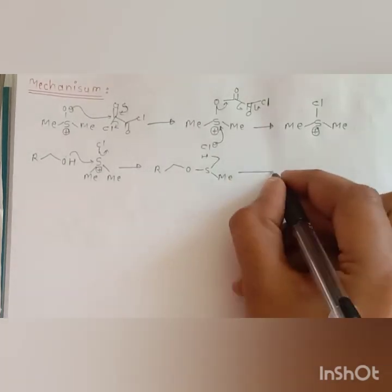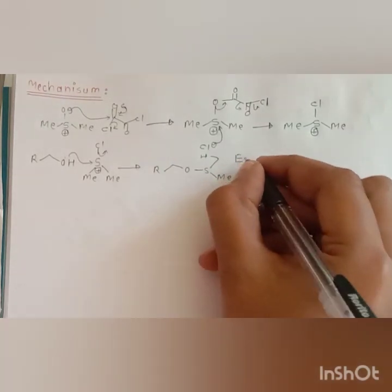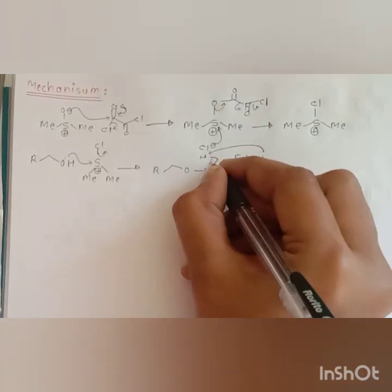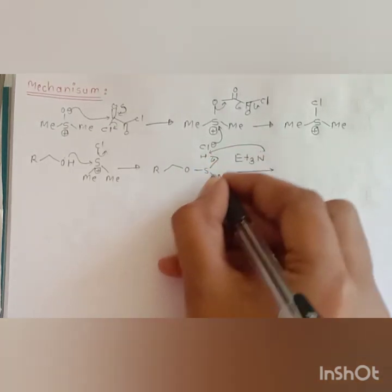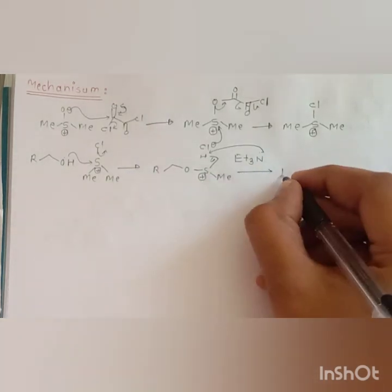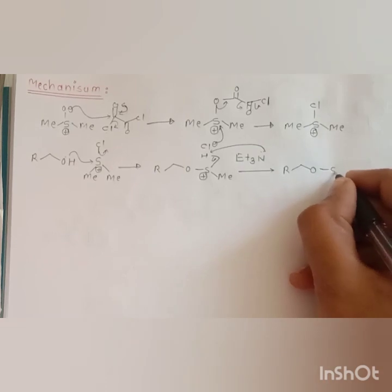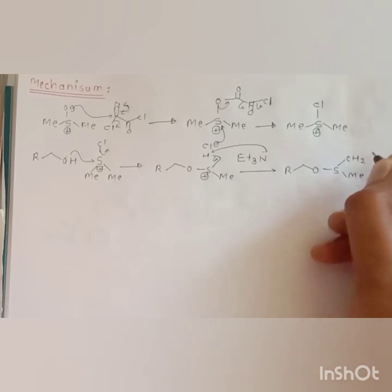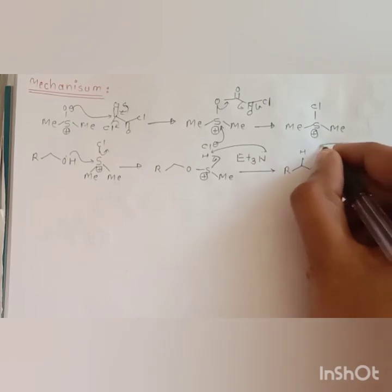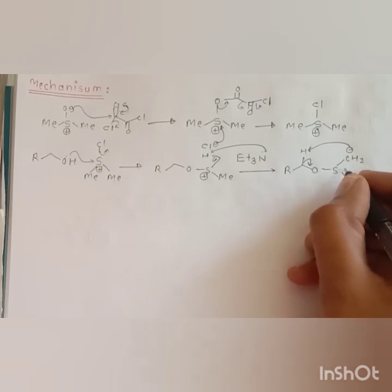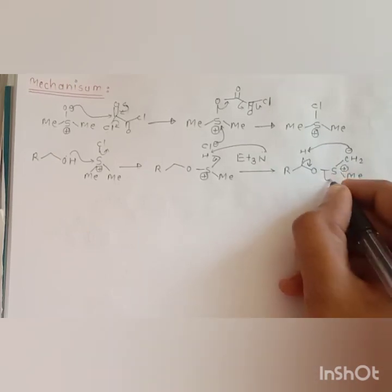Now the base triethylamine abstracts the alpha hydrogen, which is acidic due to the electrophilic sulfur, to form carbanion. This carbanion abstracts the proton and elimination of DMSO occurs.